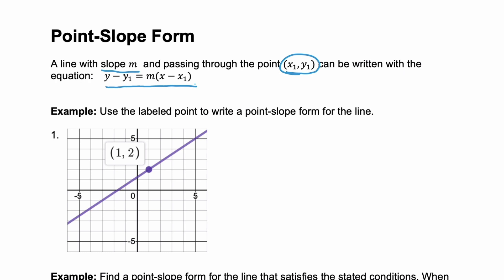Point-slope form is similar to slope-intercept form, y equals mx plus b, in that it gives us an equation for the line. The difference is y equals mx plus b uses the slope and the specific y-intercept b for that line, giving us a unique equation. Point-slope form uses any point x1, y1, so the equation isn't unique.